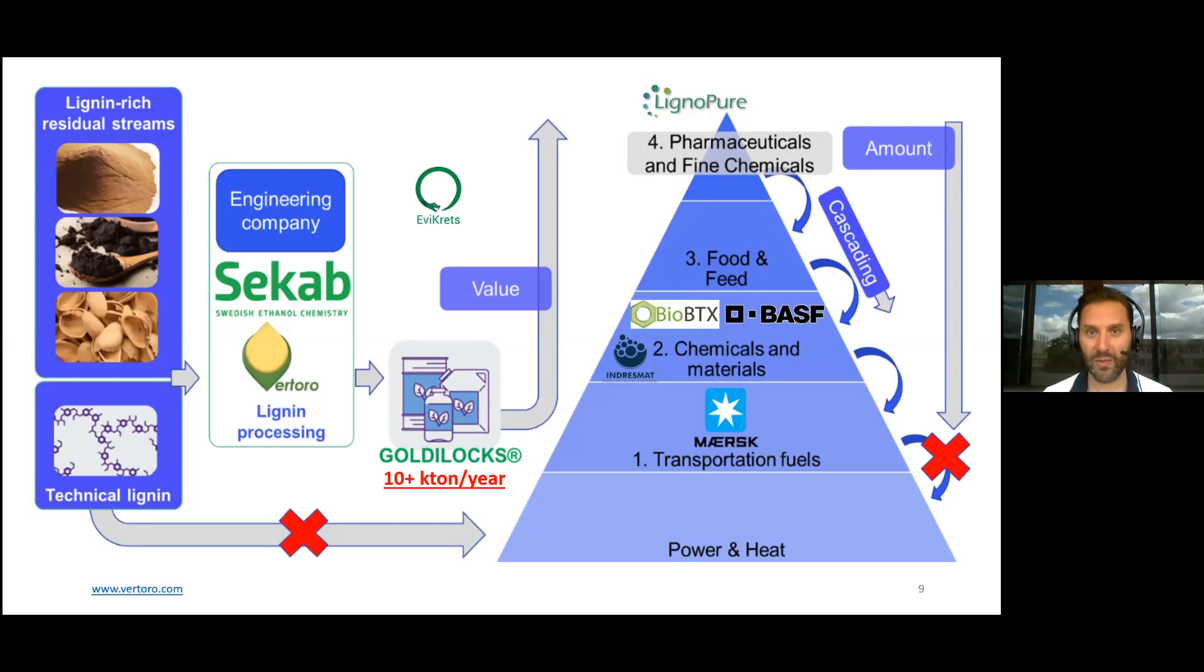Here we have Maersk, a Danish shipping company, as a partner. On the chemicals and materials side, one step higher, we have a Dutch company, Bio-BTX, which will look at the char that we produce as a source of BTX for the fast pyrolysis process. But we'll also be looking to convert end-of-life plastics produced by BASF, containing our lignin oligomers as a feedstock for this BTX.